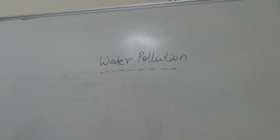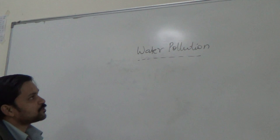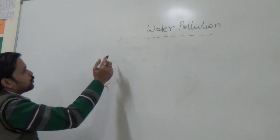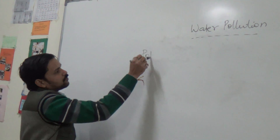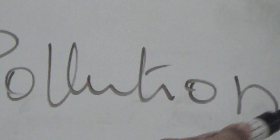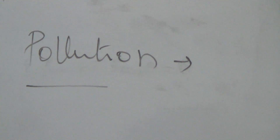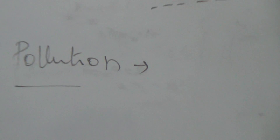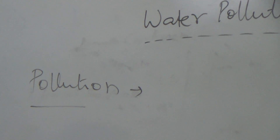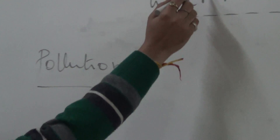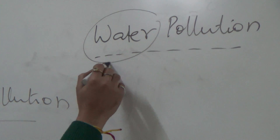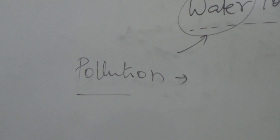Today we will discuss water pollution. First of all, we have to know what is pollution. Pollution simply means the presence of any unwanted material which disturbs the properties of other water, air, or soil. If we focus on water pollution, it simply means the presence of unwanted material only in the water.